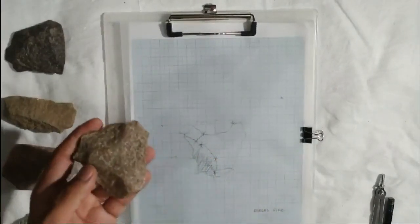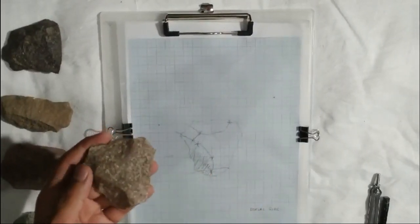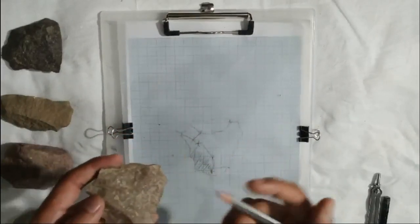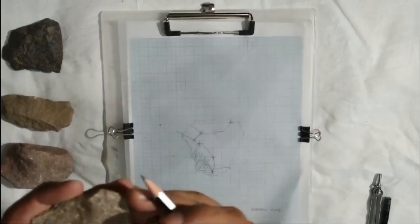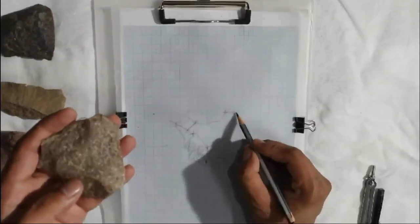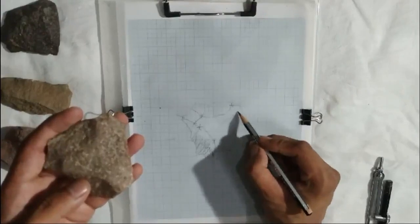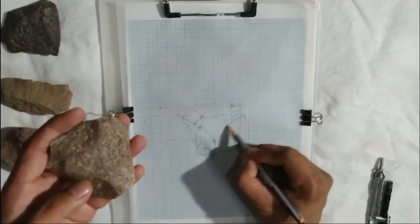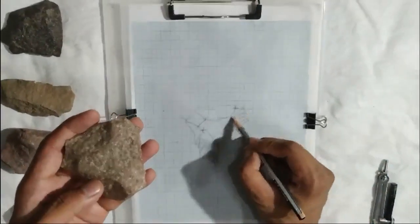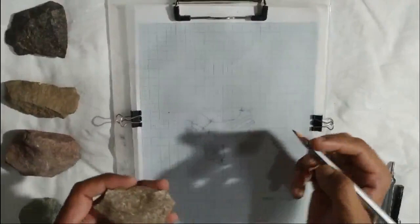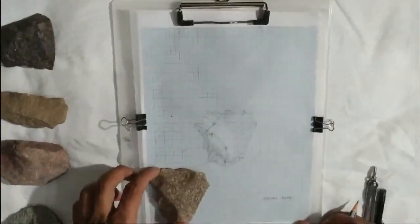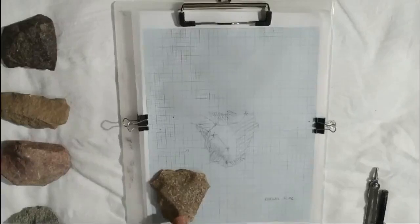When compared to this flake, the gradient here is more gentle. Hence, here the lines will be more apart. The point of percussion for this scar is here, hence we will draw the lines from here. The lines here will be a bit apart from what we drew earlier. Repeat this for all the scars on the tool and we will have a complete illustration of our dorsal side.